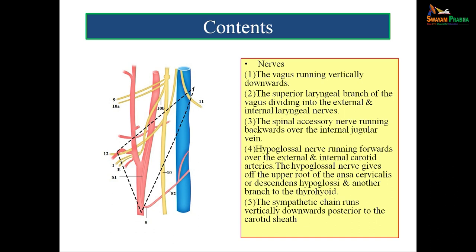The common carotid artery divides into internal and external carotid at the level of the junction between C3 and C4 vertebrae, at the upper border of the thyroid cartilage. Each artery runs upwards within the carotid sheath under cover of the anterior border of the sternocleidomastoid. The sympathetic chain runs vertically downwards posterior to the carotid sheath, while the ansa cervicalis lies in its anterior wall. The carotid sheath is a fibrovascular connective tissue framework around the common and internal carotid arteries.